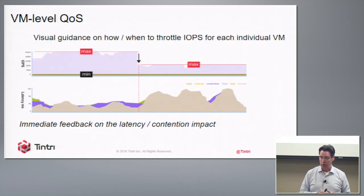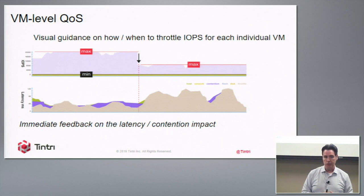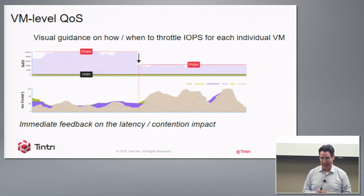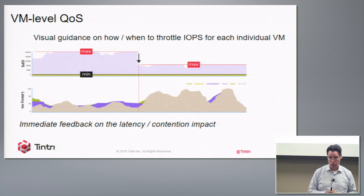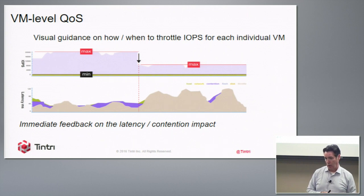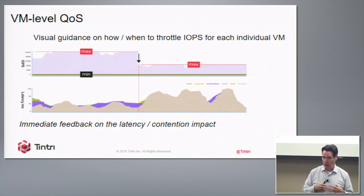Quality of service is something we introduced last year. You can specify minimum and maximum IOPS associated with individual virtual machines. This was driven by our service provider customers who wanted to specify minimums and maximums per VM or have categories of VMs with different quality of service. It's incredibly easy to use, though most customers won't set QoS explicitly. The key difference is that we do quality of service at the VM level, whereas other mechanisms do it at a volume level.